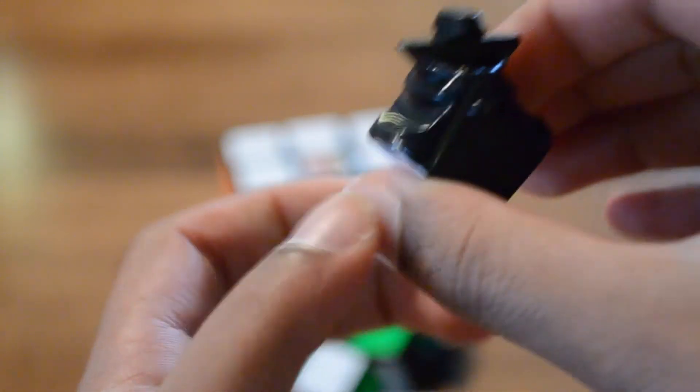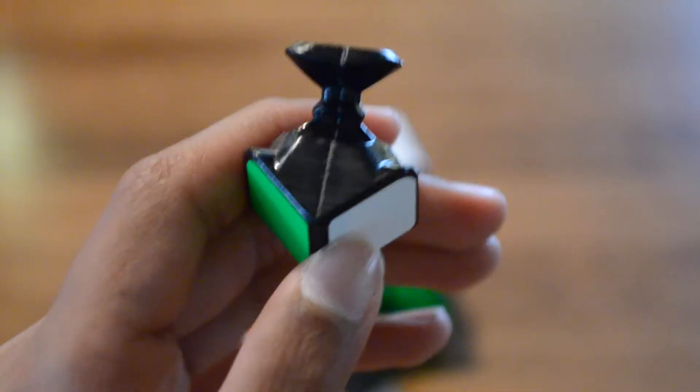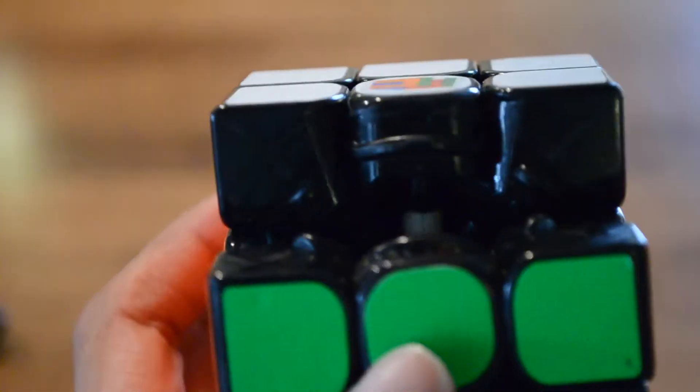The edges have retained the basic structure used in all cubes today, but have these little nubs on the side to avoid popping. There's not much to say about the corners and centers, and it doesn't pop or corner twist.